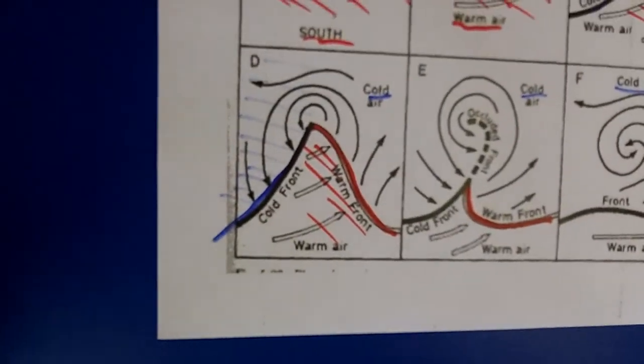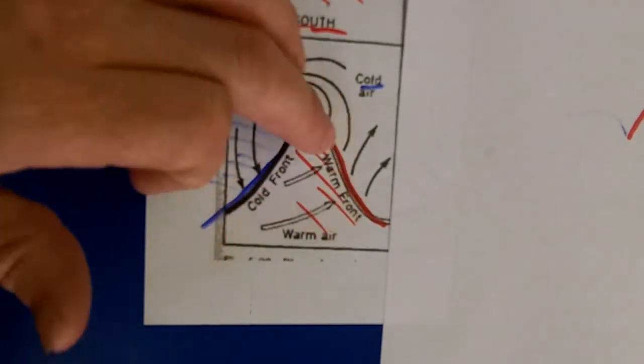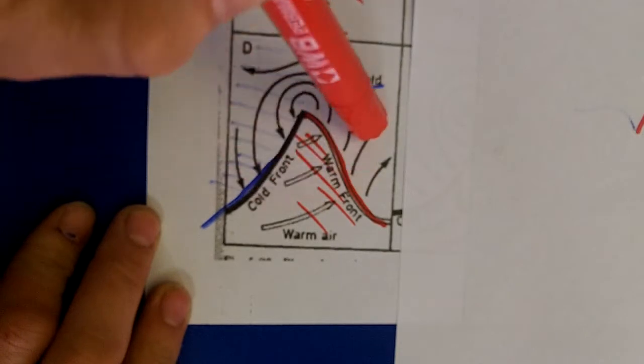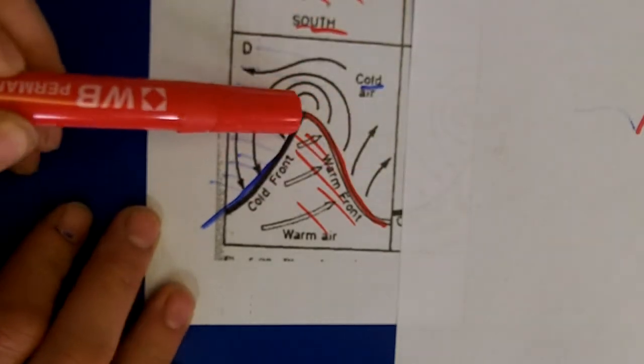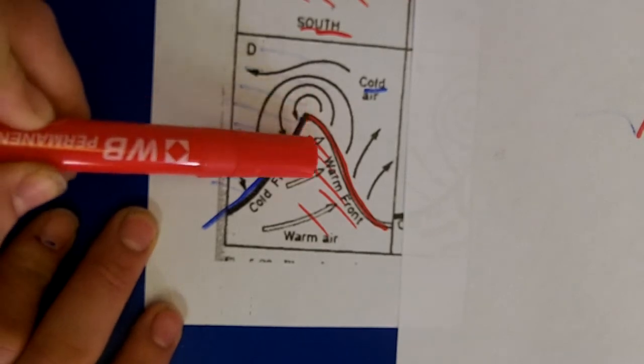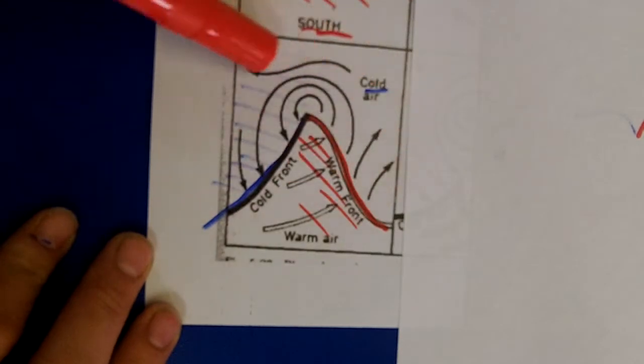So this is what you then get. This is your full-blown depression. You've got your shark's fin shape. The winds will always be blowing in this clockwise direction. The fastest winds, if this is the centre of the low, so this is the point of the lowest air pressure, the fastest winds will always be directly to the south of it. But it's always been moving in this direction.